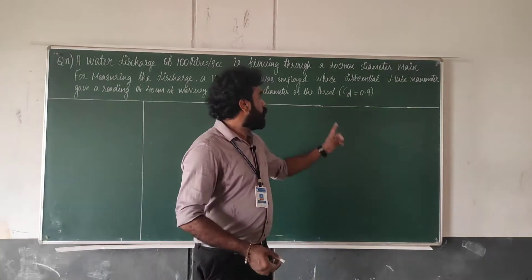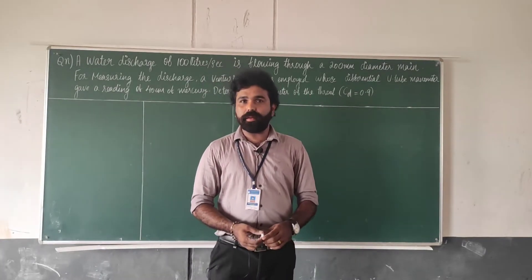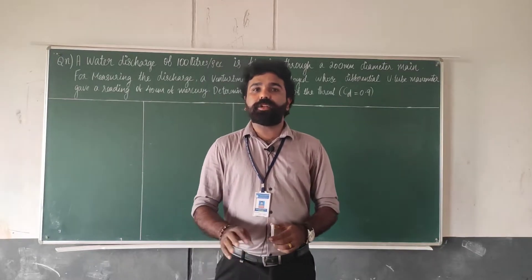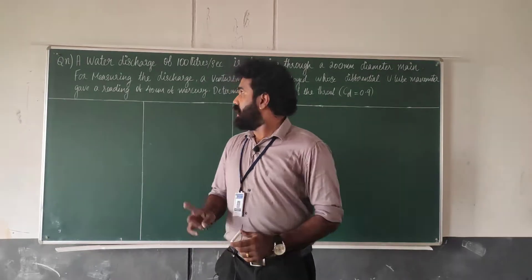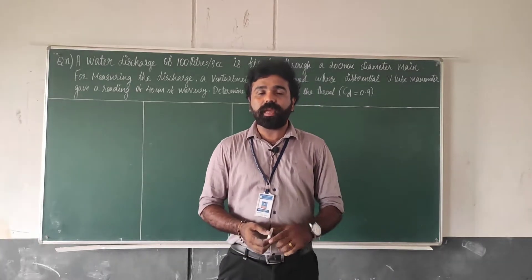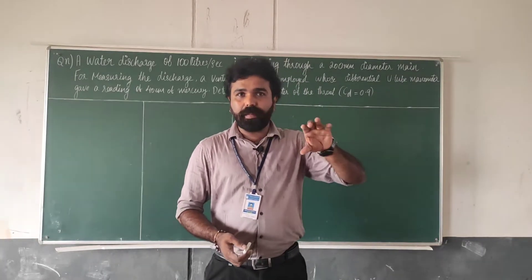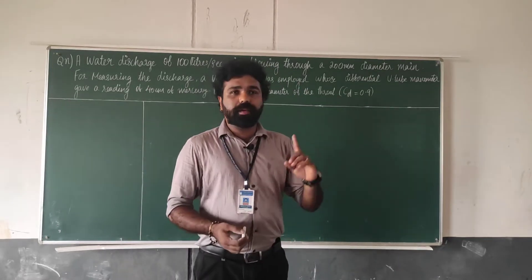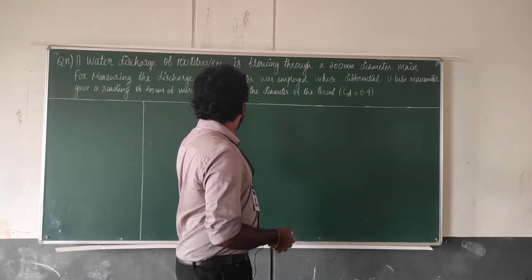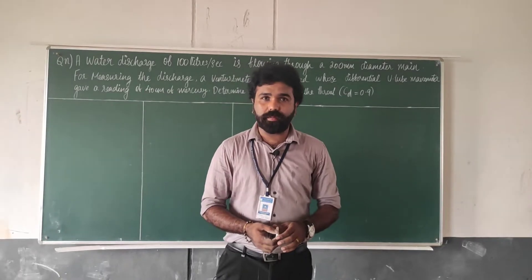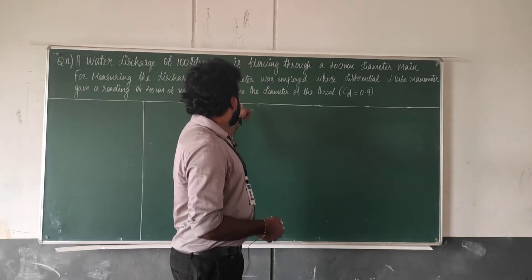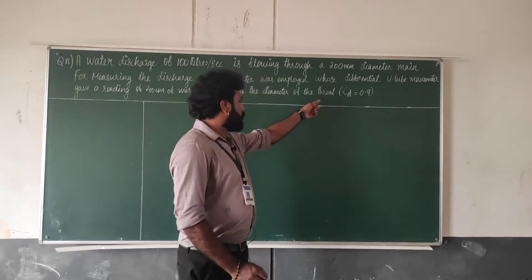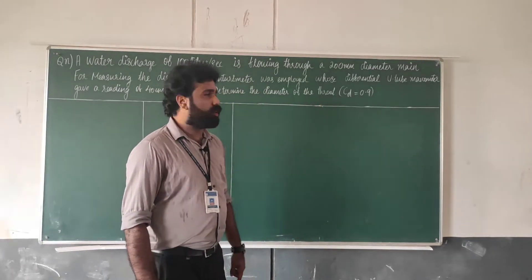The diameter of the pipe is 200 mm. The rate of flow is 100 liters per second. The differential manometer reading is 40 cm of mercury. We need to find the diameter of the throat, given CD is 0.9.